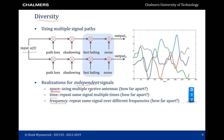These were the learning outcomes for today. You should be able to describe realizations of diversity, distinguish between different combining methods, draw block diagrams of combining schemes, compute output SNRs, and evaluate outage and average error probabilities. You should also be able to explain the difference between array gain and diversity gain.